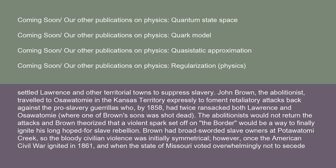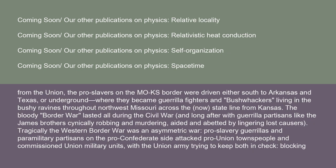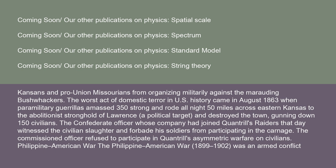Once the American Civil War ignited in 1861 and Missouri voted not to secede from the Union, pro-slavers on the Missouri-Kansas border were driven either south to Arkansas and Texas, or underground, becoming guerrilla fighters and bushwhackers living in the ravines throughout northwest Missouri. The bloody border war lasted all during the Civil War and long after, with guerrilla partisans like the James brothers robbing and murdering, aided by lingering lost causers. The Western border war was an asymmetric war: pro-slavery guerrillas attacked pro-Union townspeople and Union military units, while the Union army tried to keep both in check.